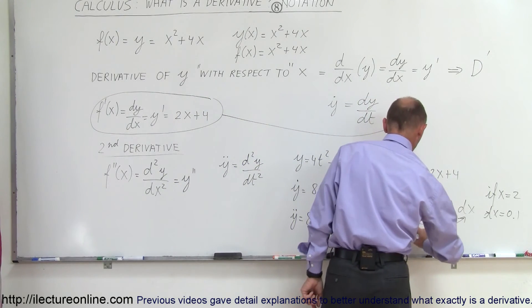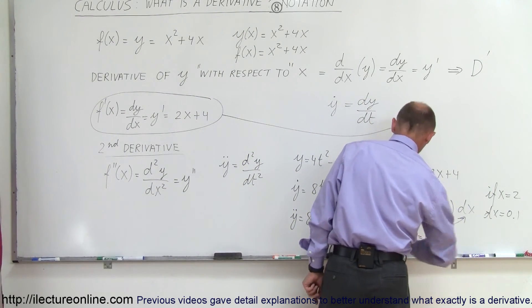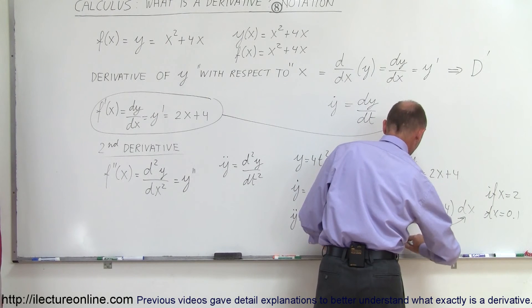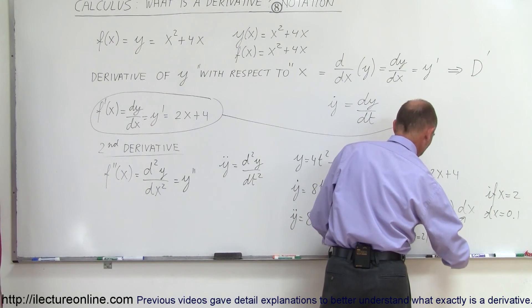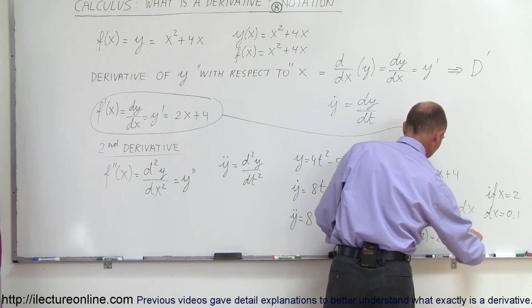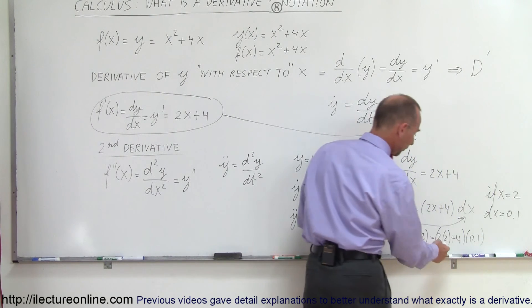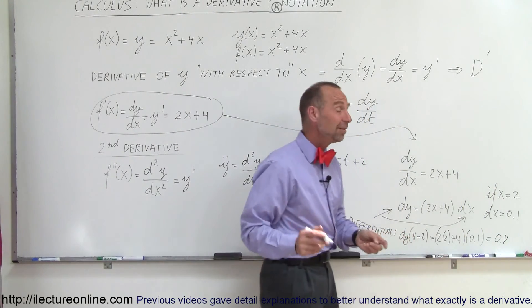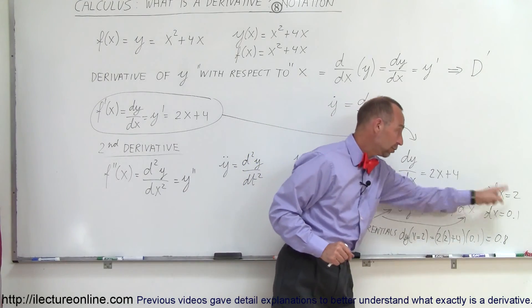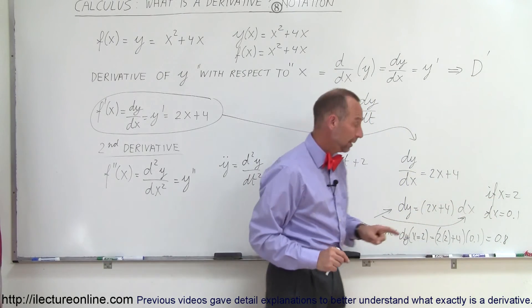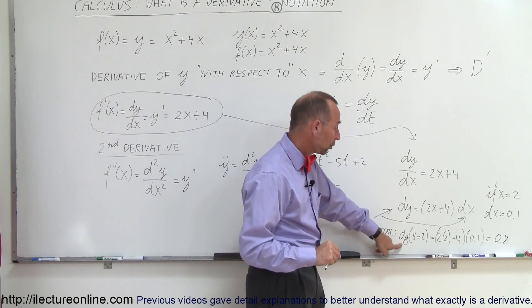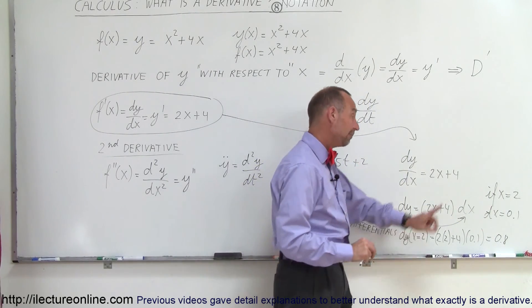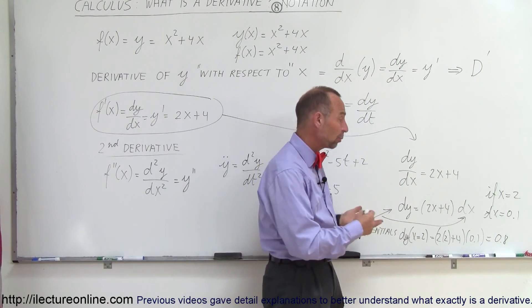For example, if x equals 2 and dx equals 0.1, then dy evaluated at x equals 2 is equal to 2 times 2 plus 4, times 0.1. That's 4 plus 4 equals 8, times 0.1, which equals 0.8. So if x is equal to 2 and x changes from 2 to 2.1 — a change of 0.1 — then y will change by 0.8. This is only true at x equals 2; at x equals 5 or x equals 10 the value will be different.